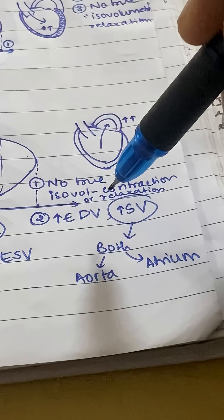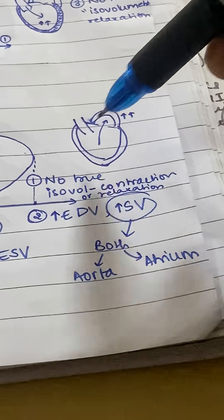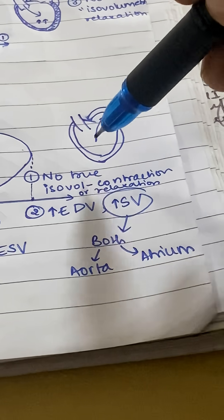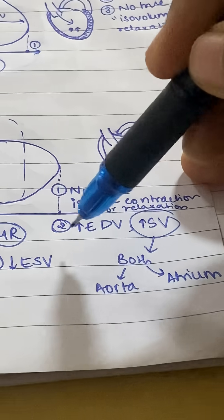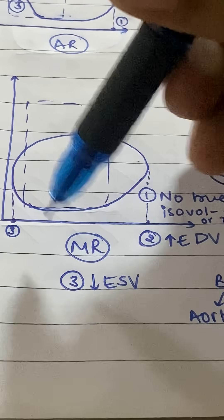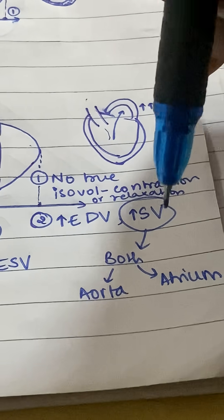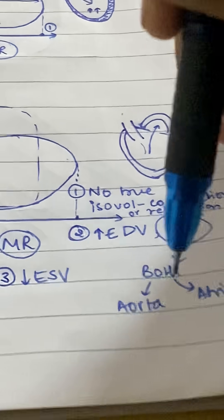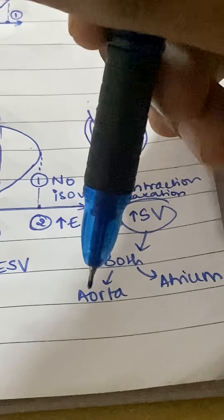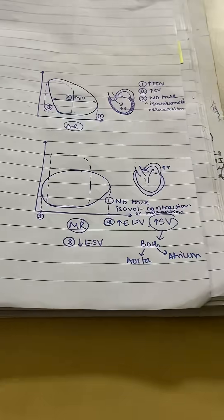Mitral regurgitation: the amount of blood ending up in the ventricle before systole — your end-diastolic volume — is always a lot, because it's getting blood not only from the pulmonary veins but also all the extra blood that has gone back into the atrium. So your end-diastolic volume is increased and stroke volume increases, but your end-systolic volume remains less. However, even though stroke volume increases, it doesn't mean it's helpful, because stroke volume includes both the blood going into the aorta and the blood going back into the atrium — so the effective forward output into the aorta is quite less.